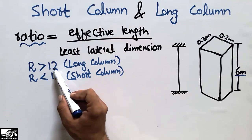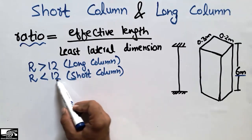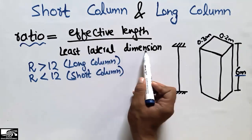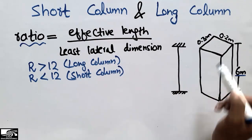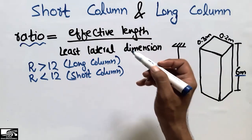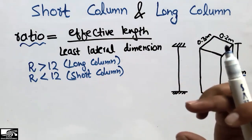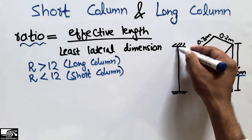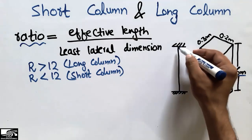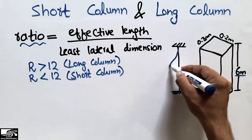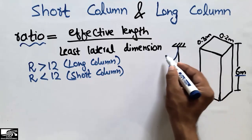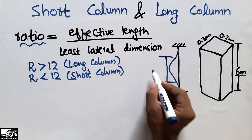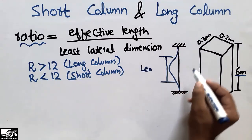According to the Indian Standard, when the ratio is greater than 12 it is a long column, and when less than 12 it is a short column. The ratio is the effective length of the column divided by the least lateral dimension. The effective length, also called the inflection length, is the length between points of inflection. For a fixed-fixed column, the column deflects and the effective length L_E is the portion between inflection points.